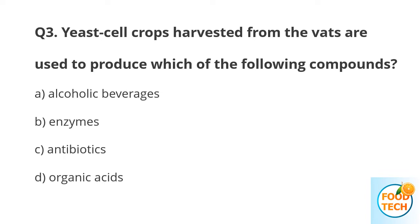Question number 3. Yeast cells grown and harvested from the vat are used to produce which of the following compounds? A. Alcoholic beverages. B. Enzyme. C. Antibiotics. D. Organic acid.